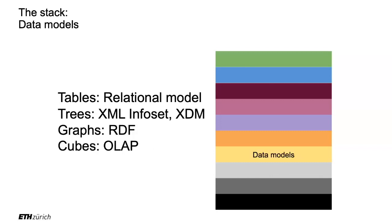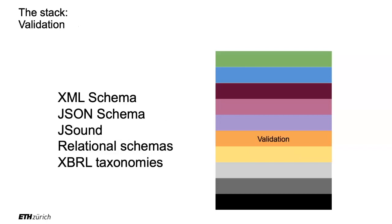Then we have data models. For tables, we've done it — that's the relational model. It turns out you can do the same thing for trees, graphs, and cubes. Then there is validation. In relational databases, you first start with a schema before populating data. In big data, we do it kind of topsy-turvy: we start throwing data into the lake without caring if it's homogeneous or heterogeneous, and we worry about finding a schema later. This is called validation.